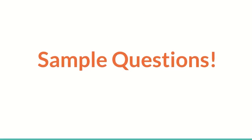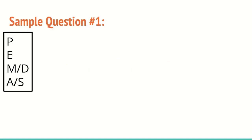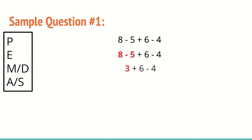Let's dive into sample question one: 8 minus 5 plus 6 minus 4. Quickly check — no parentheses, no exponents, no multiplication or division. We do have addition or subtraction, so that's the step we get to. Left to right: 8 minus 5 comes first, giving us 3, then 3 plus 6 is 9, and finally 9 minus 4 gives us 5.